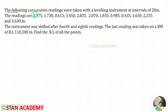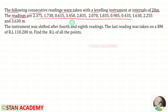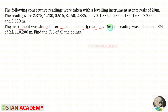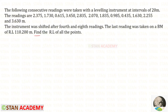The following consecutive readings were taken with a leveling instrument at intervals of 20 meters. The instrument was shifted after the fourth and eighth readings. The last reading was taken on a benchmark of reduced level 110.2 meters. Find the reduced level of all the points.